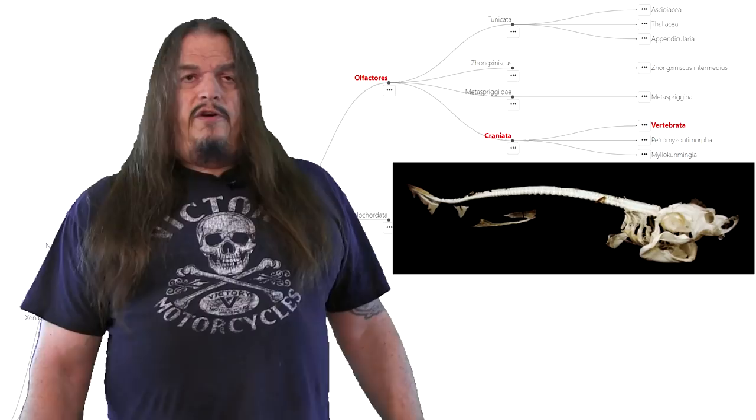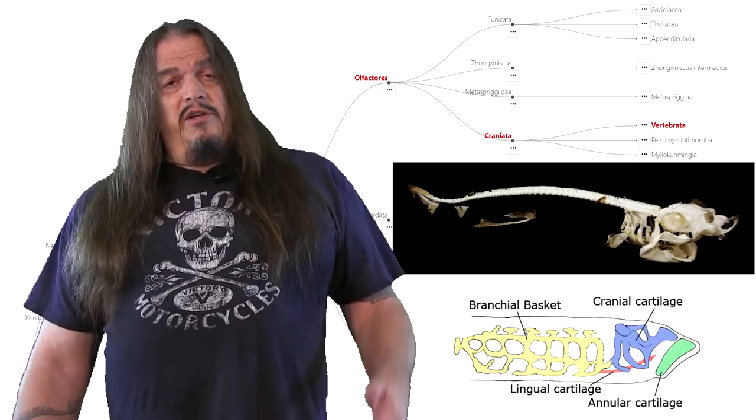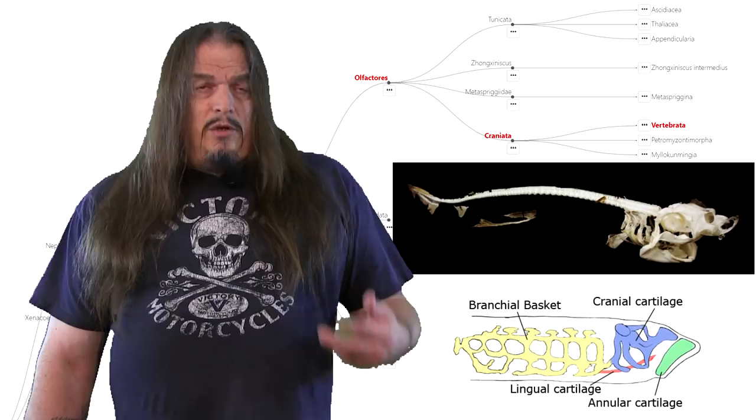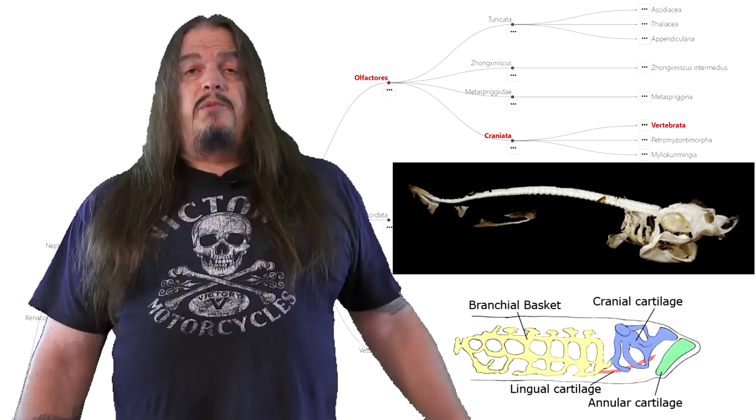Now, cartilage can, of course, appear anywhere in the body, but the greatest selective advantage comes when it surrounds and protects the brain. And as you can see, the most primitive versions of this skull look a bit like ultra-lightweight bicycle helmets. And once that pattern is established, it's a relatively simple adaptation to continue that growth on down the spinal cord.